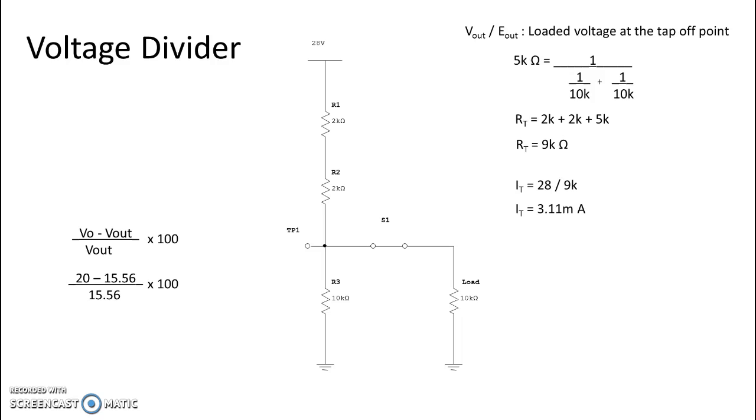Now, we are still measuring at test point 1, so we're measuring from ground to test point 1. Our black lead is on ground, our red lead is on test point 1, so we are reading across our parallel of R3 in our load device. So the ohmic value of that is 5k ohms. We take our 5k ohms, and we multiply that by our 3.11 milliamps, and we get a total voltage of 15.56 volts at our tap-off point, and that is the out, or the voltage out when current is applied to our load device. So now we have both the voltage out, and we have our loaded voltage, and we have our unloaded voltage, so we can go and do percent of regulation.